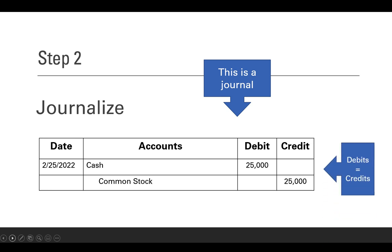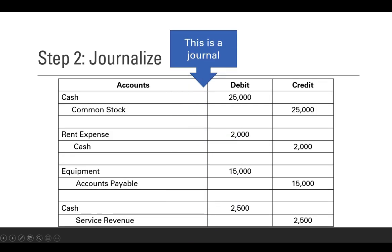When we have all of our entries journalized together, this is what it looks like. Debits always have to equal credits — the dollar amount of all your debits has to equal the dollar amount of all your credits, even if you have 10 debits and 10 credits. Here are all of our journal entries with the debits and credits. But what if we have a thousand transactions? How much cash do we have, or how much do we owe in accounts payable? It's difficult to find out because of the format of the journal, so we're going to solve that problem.